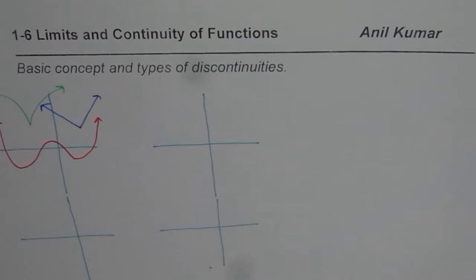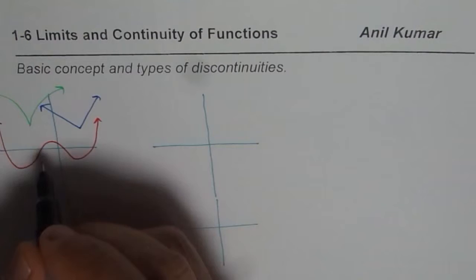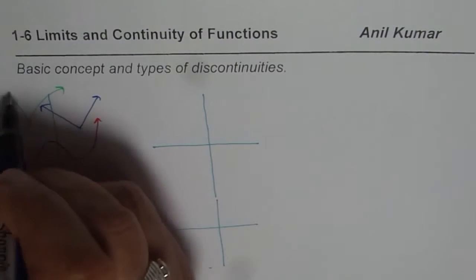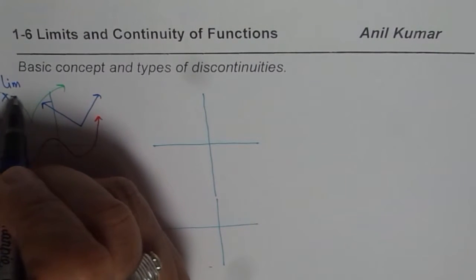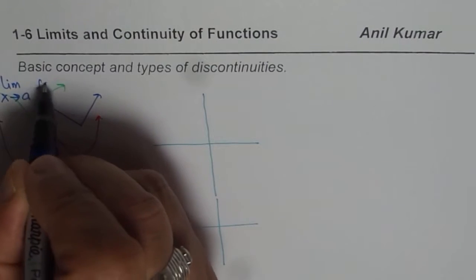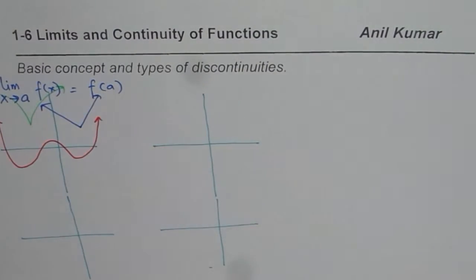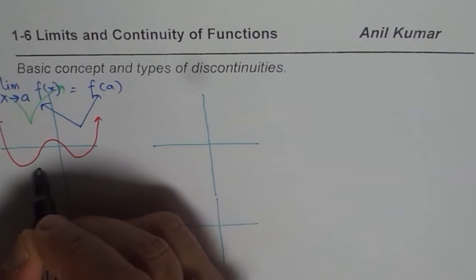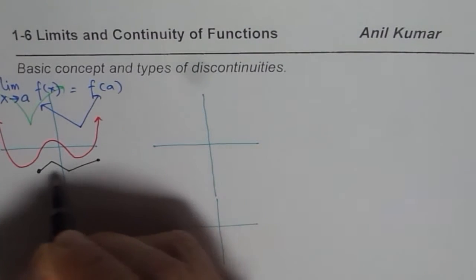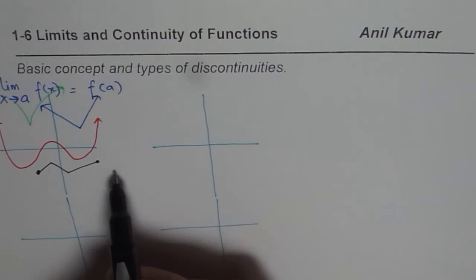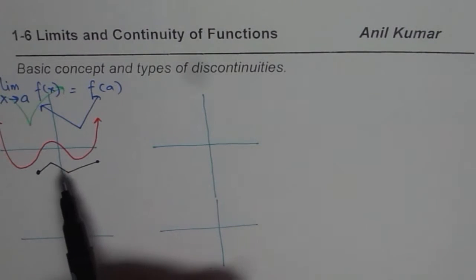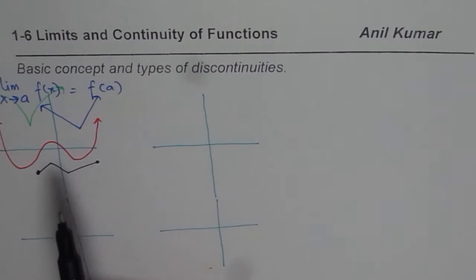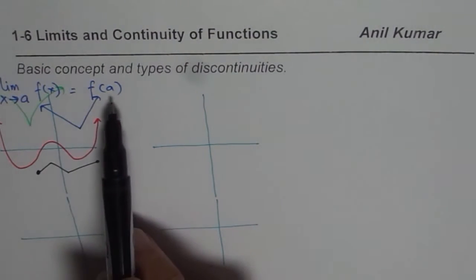In all these continuous functions, the limit is equal to the value of the function. Whenever we say the limit of f(x) as x approaches a, we find it is equal to f(a) — that is the limit at any point a for a continuous function. We could also be working in a restricted domain, and in that particular domain the function is continuous, with the limit existing and equaling the function value at that point.